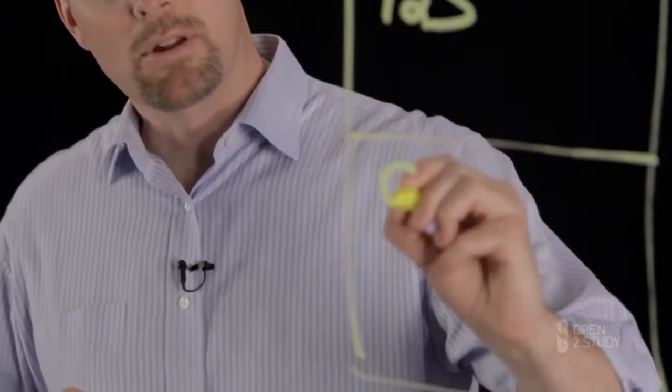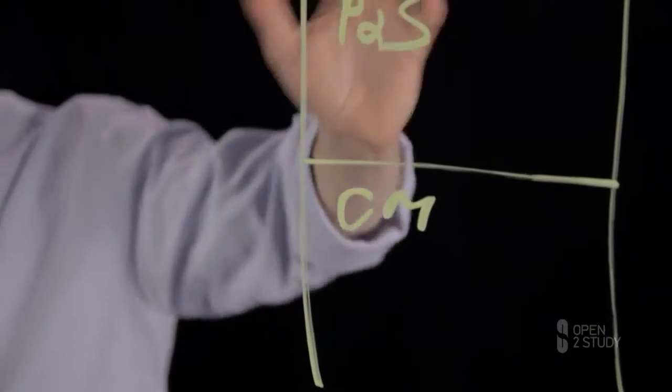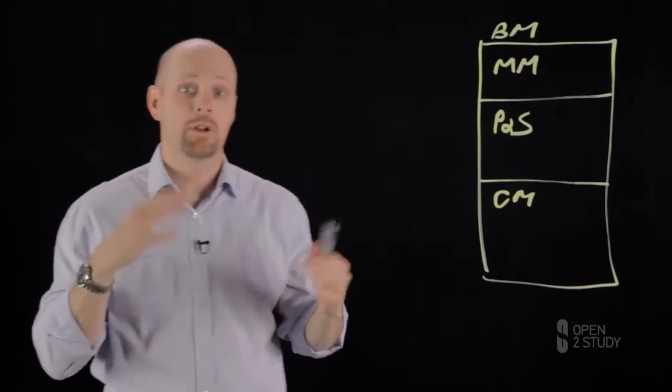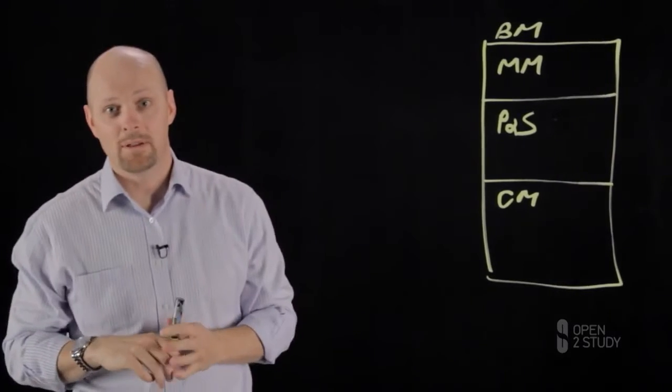And down at the bottom here, you have a concept called an operating model. So all of these, an operating model, a products and services model, and a market model, wrap all that together and that gives you your business model. And the business architecture discipline, its focus is to help you deliver that and show you how you string those pieces together.